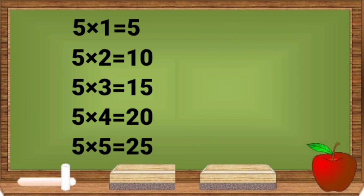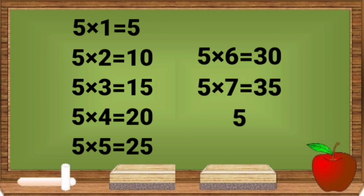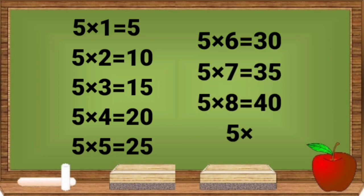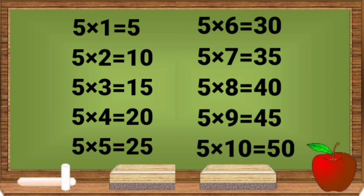5 sixes are 30. 5 sevens are 35. 5 eights are 40. 5 nines are 45. 5 tens are 50.